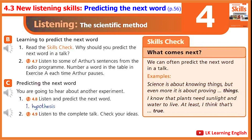4.9. Exercise C2. Listen to the complete talk. Check your ideas. I made a hypothesis. Plants need things to help them grow. I think they need sunlight and water. I bought three plants. I tested the hypothesis. I put one plant in a cupboard so it did not get any sunlight. The plant went yellow. The second plant did not get any water. The plant died. I put the third plant in sunlight. I gave it water. It grew well. It did not go yellow. I proved my hypothesis.